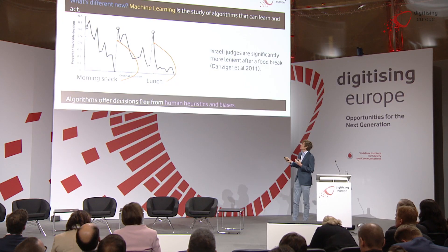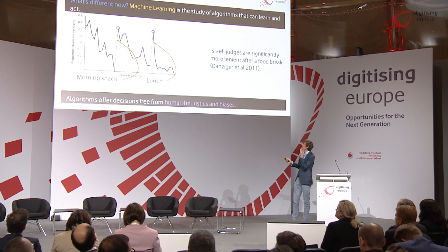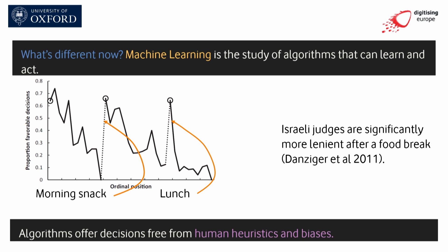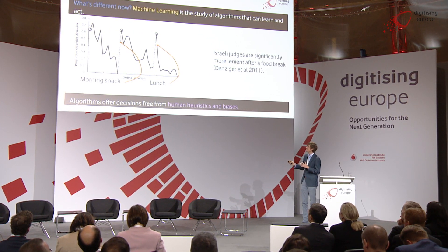This is the probability of them making a favorable decision as a function of ordinal position in the day. You can see that they start out the day fairly positive towards the prisoners, but as the morning wears on they become less and less likely to award parole, only to be perked up by their morning coffee, only for that to decline leading into lunch, and subsequent to lunch it's more or less a complete write-off. I'm aware that we're somewhere around here in the day's proceedings, so I'll beg your forbearance.